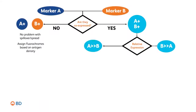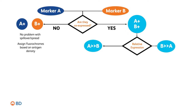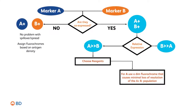If marker A is expressed at higher levels compared to marker B, use a dim fluorochrome that introduces minimal spread into the detector used for marker B. Make sure to use fluorochromes bright enough to resolve your population. Unnecessary use of bright fluorochromes can result in increased spread and loss of resolution. Since marker B is dimly expressed in our example, you can use a brighter fluorochrome.